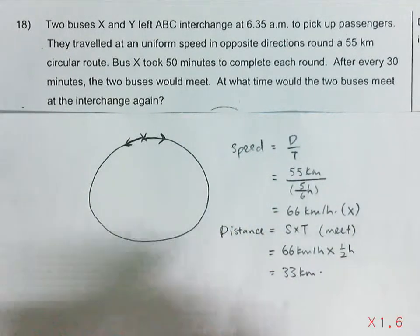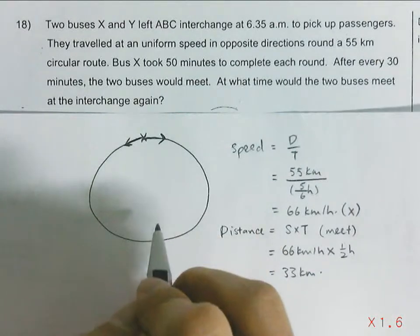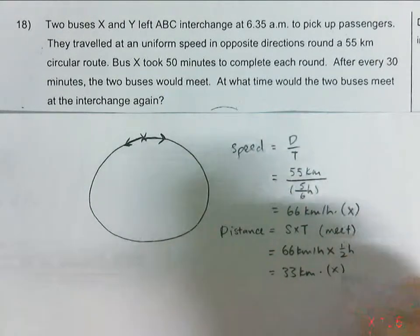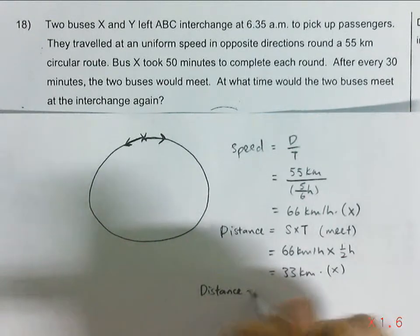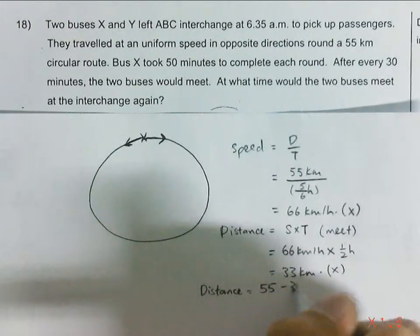Now since the circular route is 55km, we know that Bus Y distance traveled by Bus Y would be 55 minus 33 which is 22km.